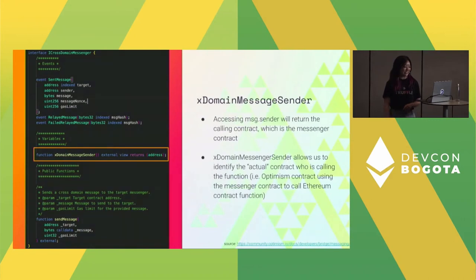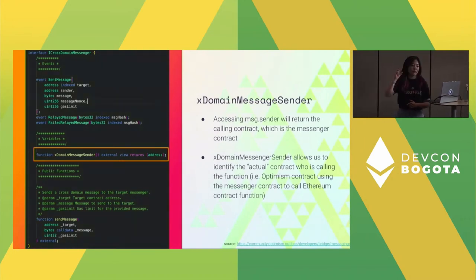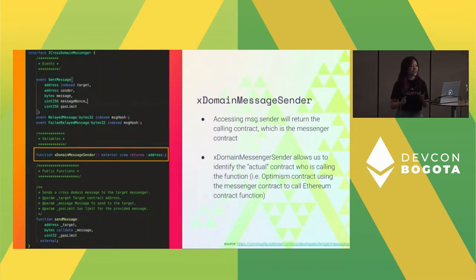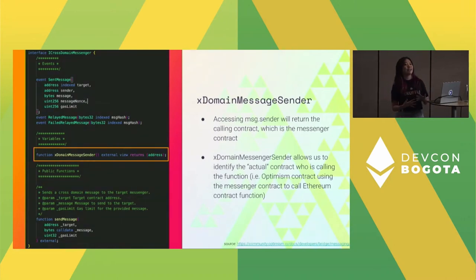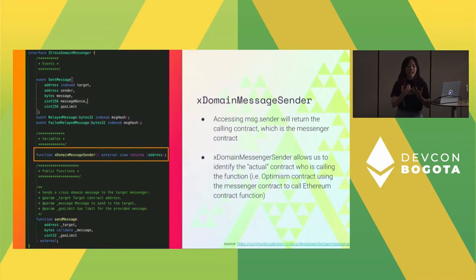The next piece is cross-domain messenger sender. When you call contract functions on a smart contract, message.sender is how you know the address that is calling it. But when thinking about bridging — say an L1 contract is calling an L2 contract function — message.sender is actually going to surface the address of the L1 cross-domain messenger contract, the pre-deployed Optimism one. The way this is implemented allows you to call xDomainMessageSender and it will return the original L1 contract address, not the address of the deployed messenger contract.